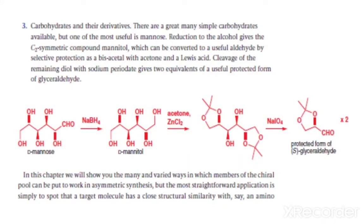In this chapter we will show you many and varied ways in which the members of the chiral pool can be put to work in asymmetric synthesis. The most important and straightforward application is simply to spot that a target molecule has a close structural similarity with, say, an amino acid.